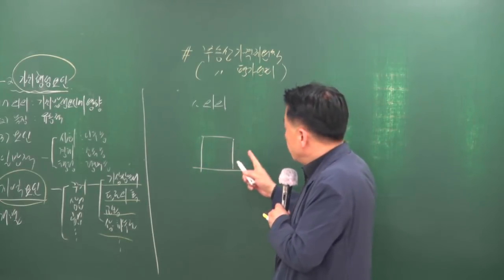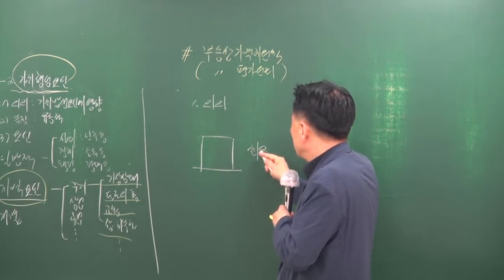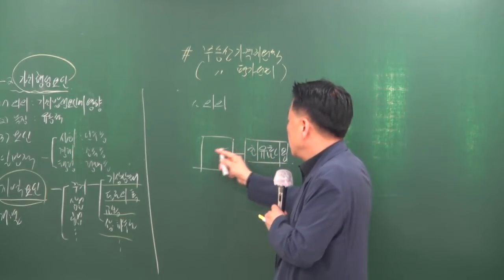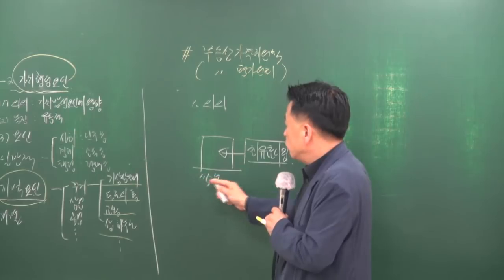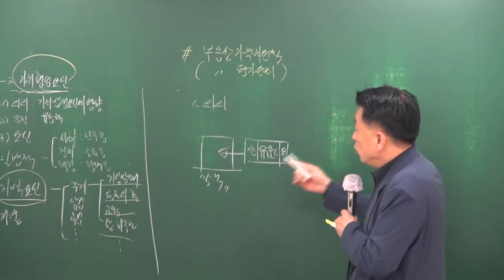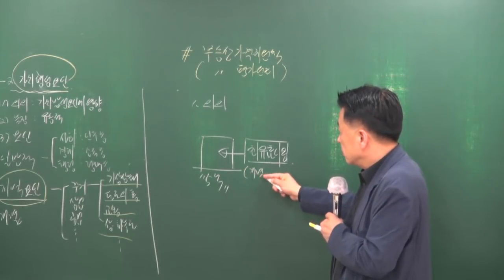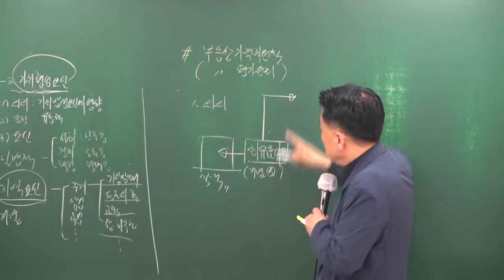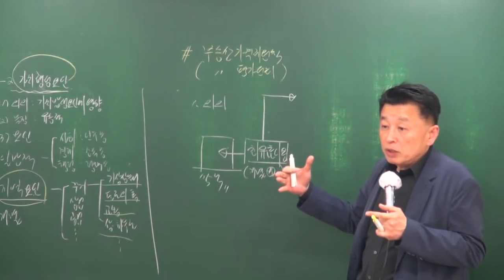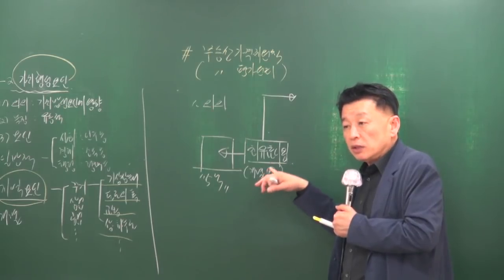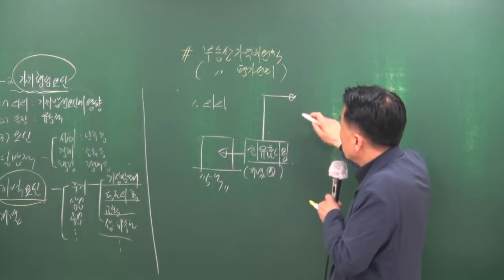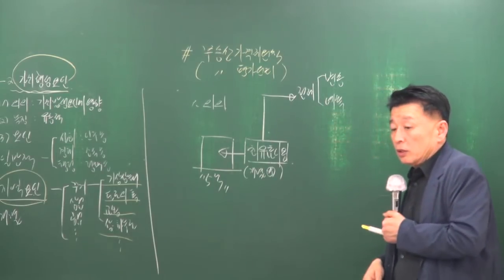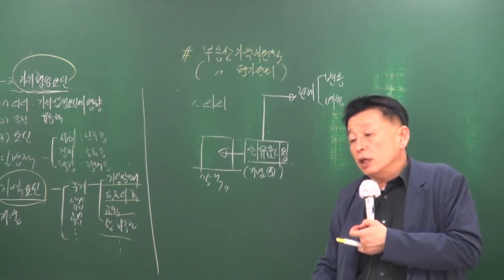평가사가 부동산의 가치를 추계할 때는 최유효 이용 상태를 기준으로 판정합니다. 만약 5억이라고 가치를 추계했을 때는 이유가 있습니다. 개별 부동산의 최유효 이용은 지역 환경이 변하면 달라집니다. 최유효 이용 상태를 판정하기에 앞서 전제가 되는 원칙이 변동과 예측의 원칙입니다. 예를 들어 충남 연기군이 세종시 행정도시로 바뀌면 최유효 이용 상태가 농지에서 택지로 달라집니다.